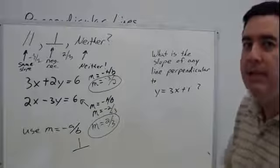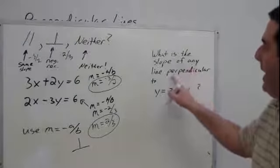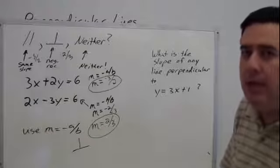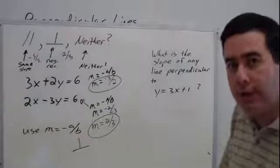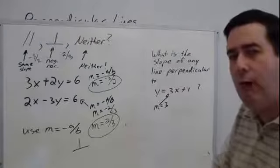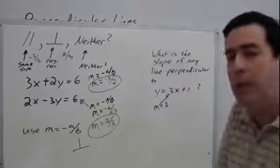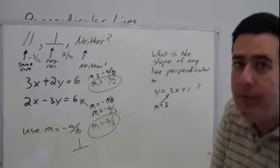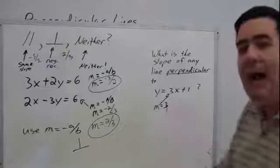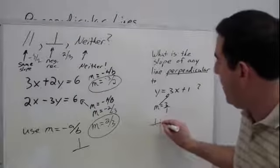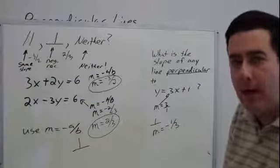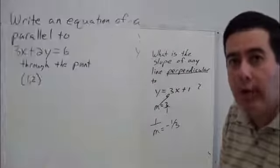Another way you may have to decide is: what is the slope of any line perpendicular to y equals 3x plus 1? When you hear the words 'perpendicular' or 'parallel,' you have to know the slope. Since this one is in slope-intercept form, the coefficient of x is the slope — so the slope is 3. If the question said parallel, we'd say 3 again. But this question said perpendicular, so we need to flip 3 over and change its sign. The slope of the perpendicular line would be negative 1 third. To make a perpendicular slope, flip it over and change the sign.